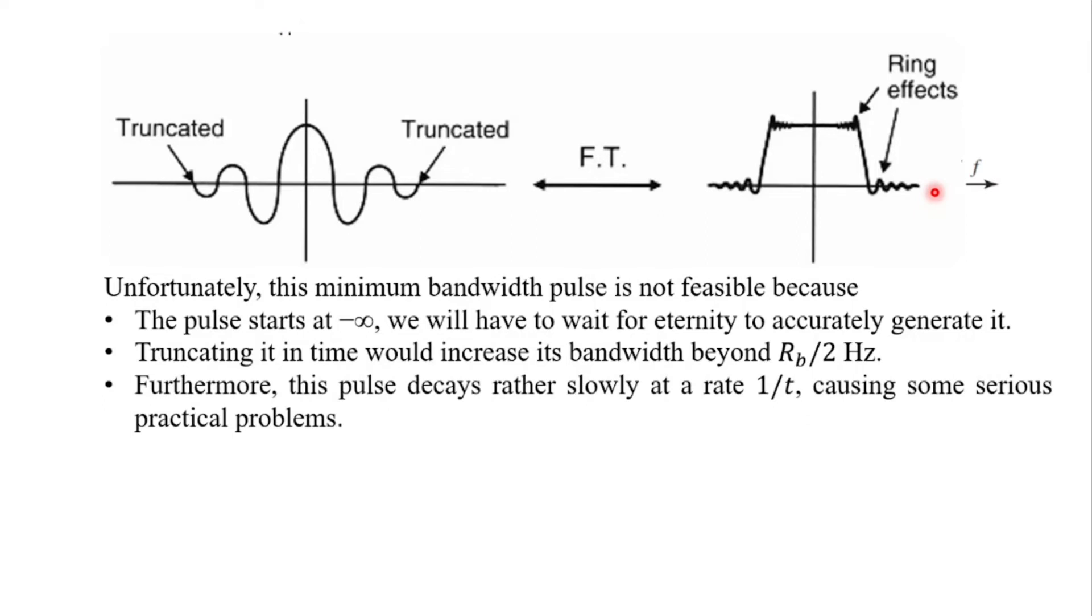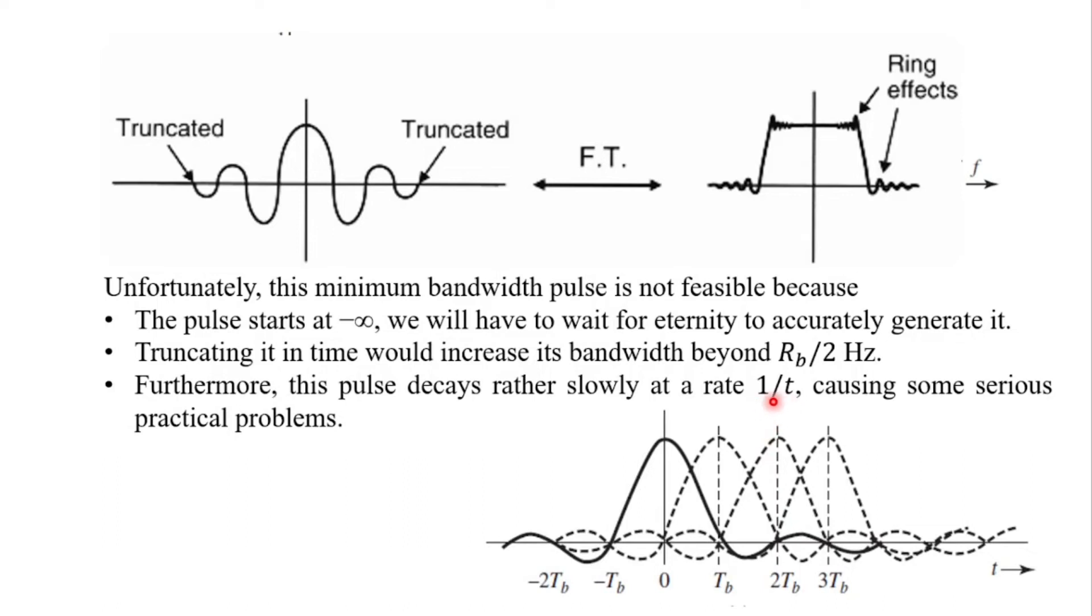Furthermore this pulse decays rather slowly at a rate of 1 by t causing some serious practical problems. So this rate of 1 by t is coming from the sinc function which is simply sin of t by t. So this will have an effect in terms of timing jitter. That is if we have a small perturbation from the sampling instant of integer multiples of Tb.